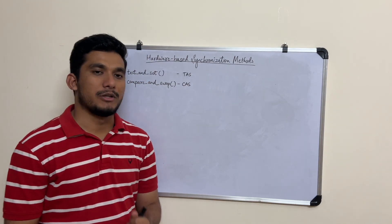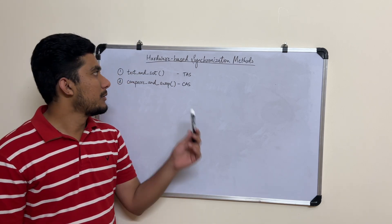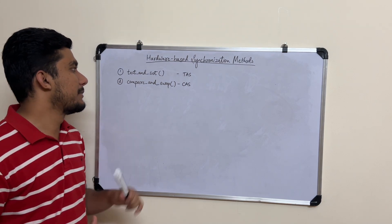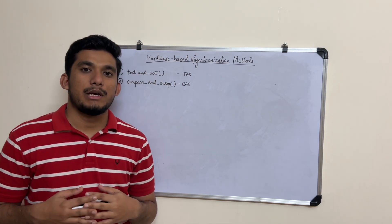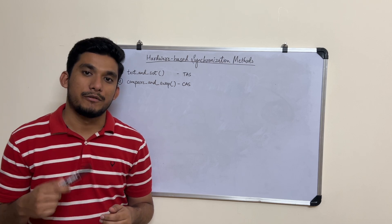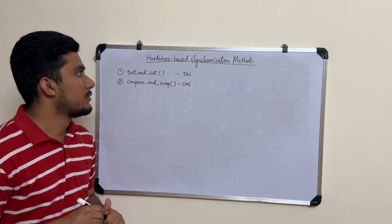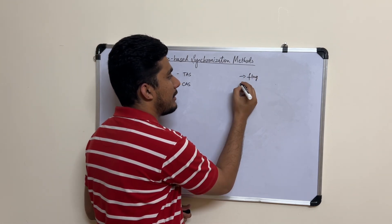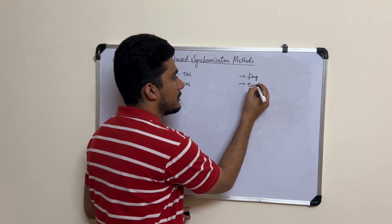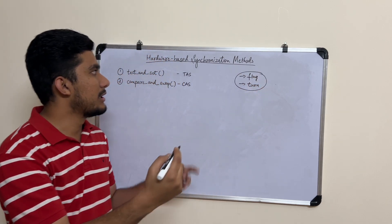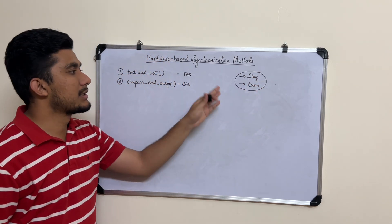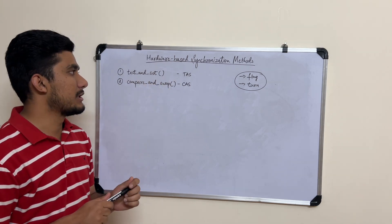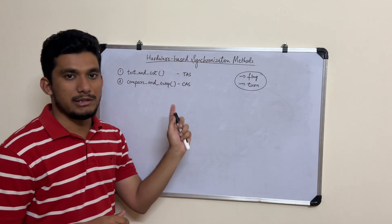Hello everyone, welcome back to the series on process synchronization. In this video we'll be talking about hardware-based synchronization methods — things like test-and-set and compare-and-swap. In the previous video we talked about the software-based solution like the Peterson solution, which made use of two variables: the flag and the turn. Now in this video we will focus more on hardware-based synchronization.